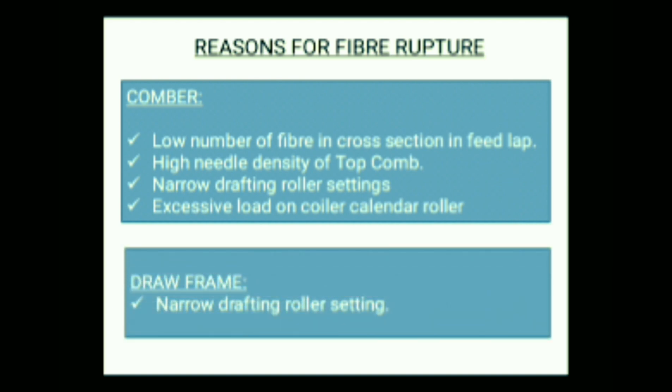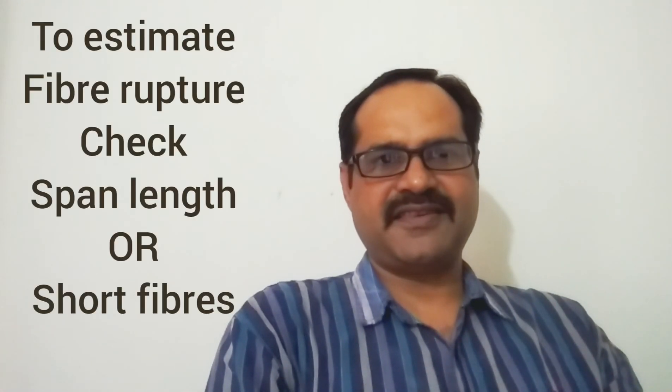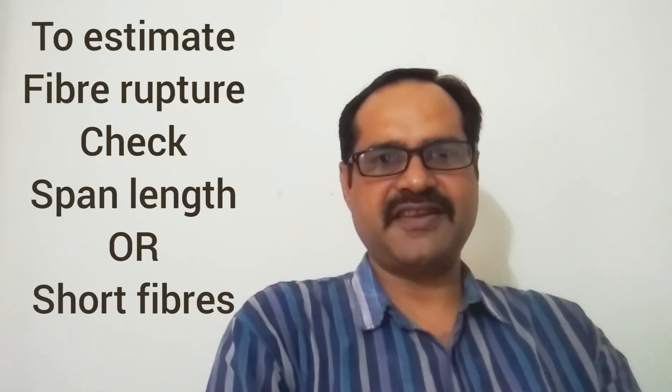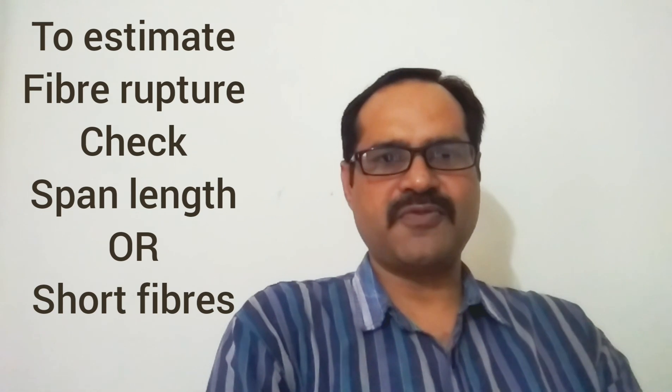In drawframe, narrow drafting roller settings are the major reasons for fiber rupture. Fiber rupture can be predicted either by span length reduction or short fiber increase in output material for any blowroom beater, carding, comber, or drawframe.